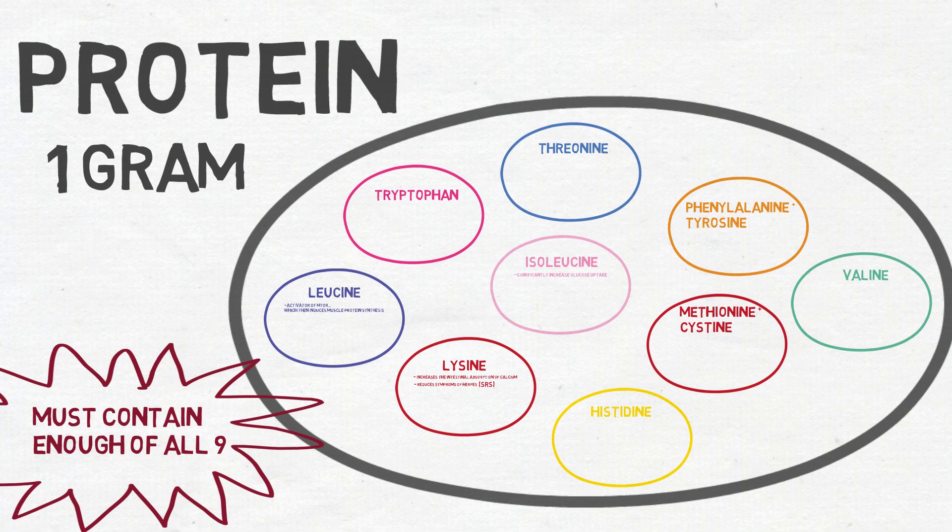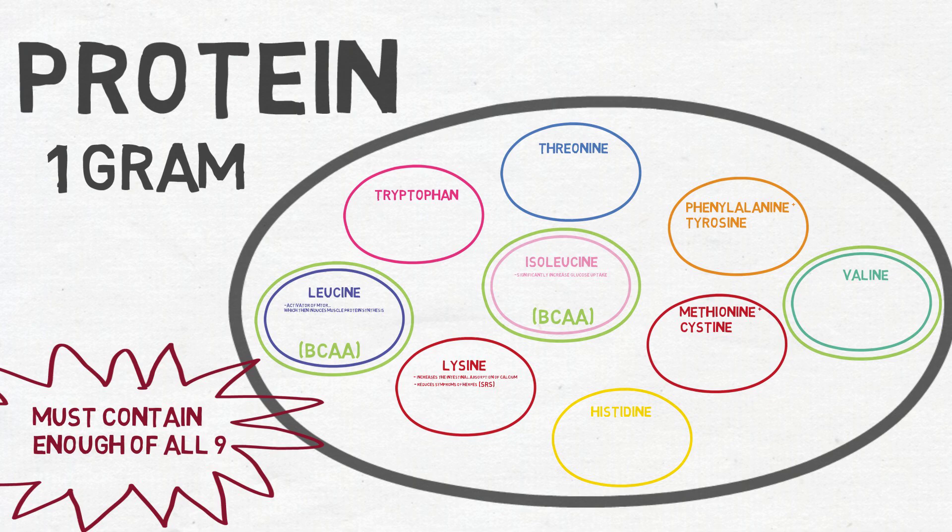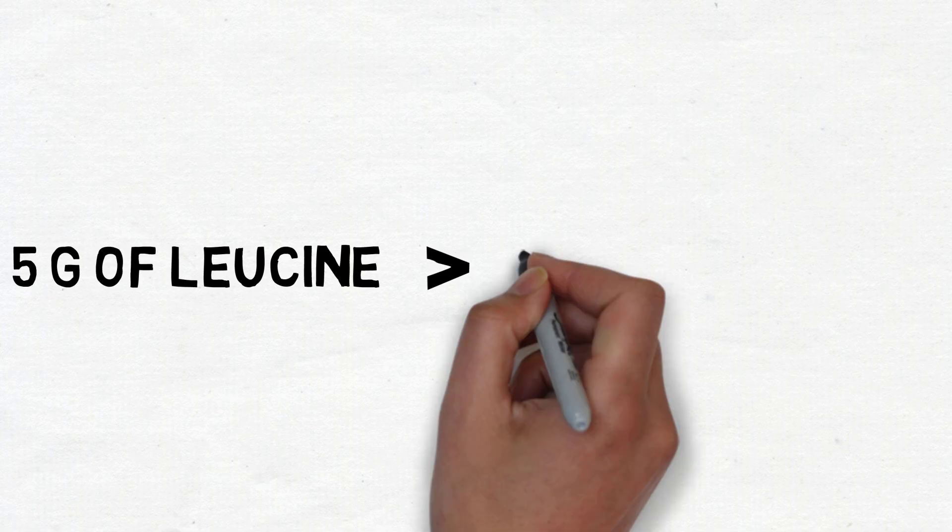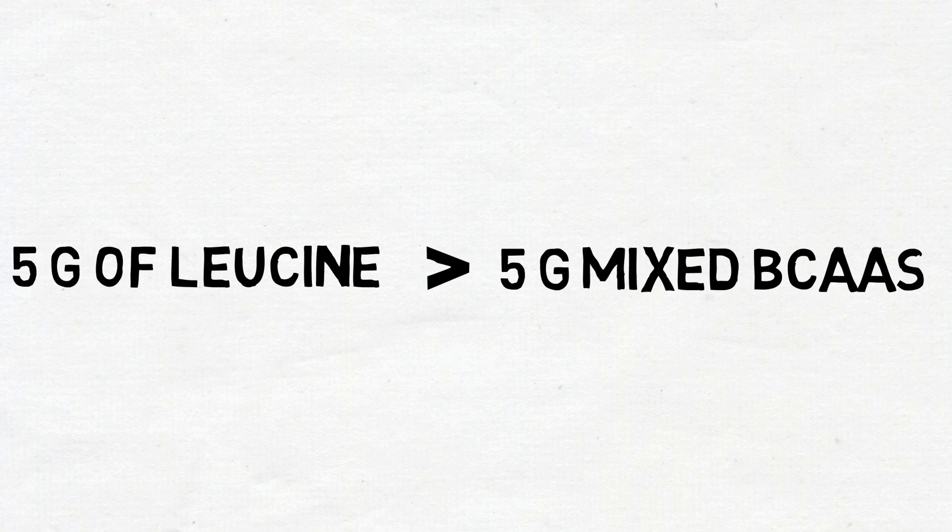So what would happen if you were to cherry-pick the amino acid with the greatest benefits to muscle gain and supplement with that? Then you'd be supplementing leucine, part of the family of three known as the branched chain amino acids. Although you will sometimes hear about people supplementing with BCAAs, many studies have actually shown leucine is so beneficial that it is better to supplement with just leucine versus a mix of the three BCAAs.